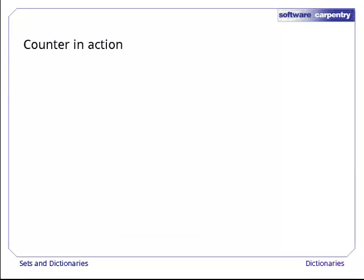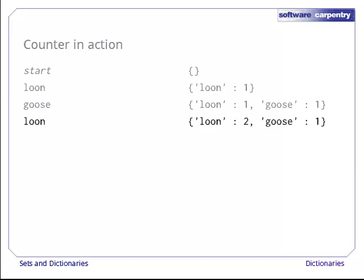Let's watch our counting function in action. Before we read any data, our dictionary is empty. After we see loon for the first time, our dictionary has one entry. The key is loon and the value is one. When we see goose, we add another entry to the dictionary. And when we see loon for the second time, we add one to its count.